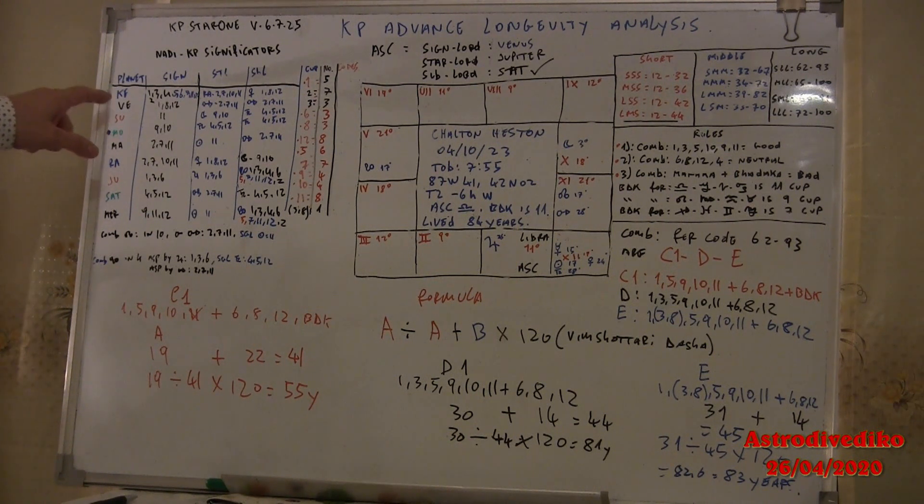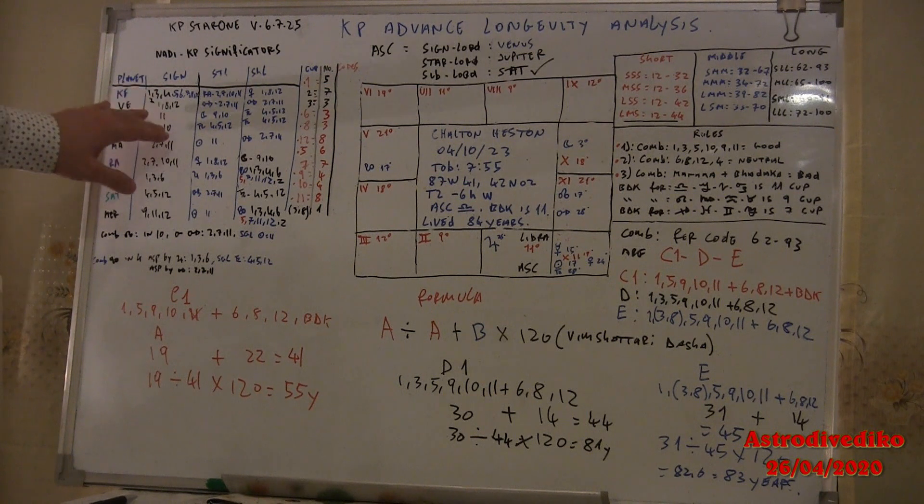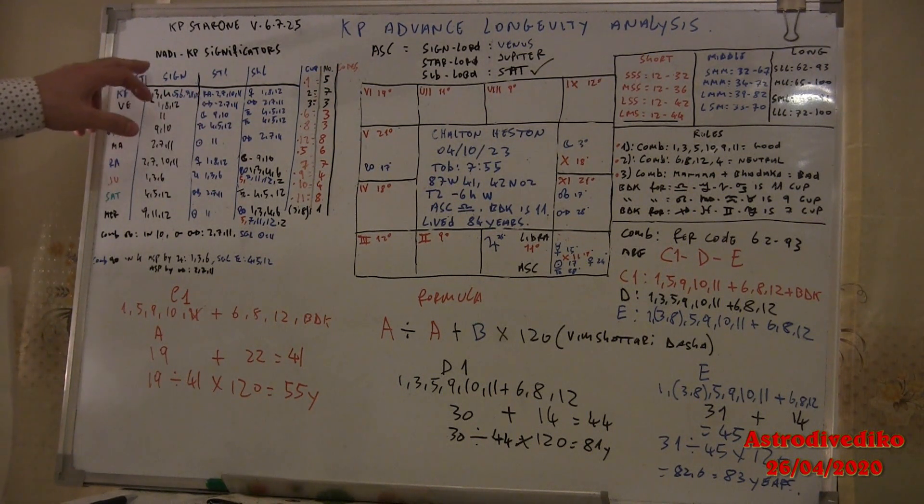In the original method, every planet sign, star, sub were calculated. Instead, nodes, only the signs.